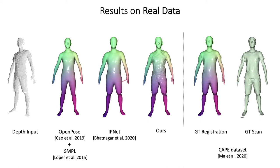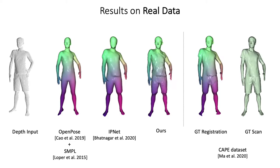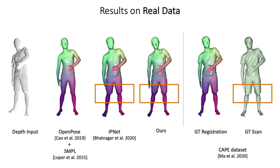And with the recent IPNet, which combines learned implicit functions with traditional parametric models. Like IPNet, we can recover detail present in the input data, such as the shorts and the knee.